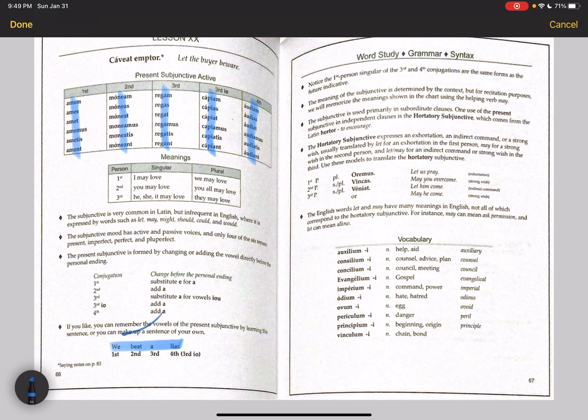In terms of the meaning in the subjunctive, it's heavily dependent on the context, which you see in a note on page 67 here. The meaning is determined by the context, but for recitation we will memorize may. So you memorize may, but we'll learn many different translations for a subjunctive verb. Again, the subjunctive is very common in Latin, but very infrequent in English. And when we do see it in English, it comes with one of these helping verbs here.